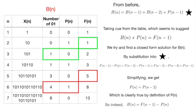Clearing all the terms, we get the expression P(n) equals P(n-2), which is obviously true. This means the relationship B(n) equals F(n-1) minus P(n) holds, and we have solved the problem.